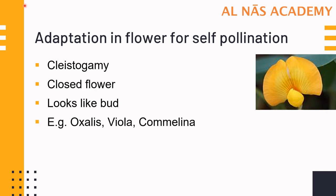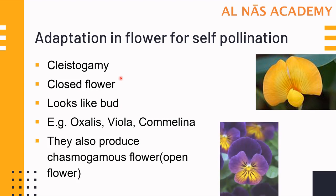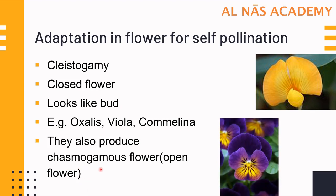An example is oxalis, viola, and Commelina. These plants produce two types of flowers: kleistogamous and chasmogamous. Chasmogamous flower means an open flower. Kleistogamous flower is an adaptation for self-pollination, and chasmogamous flower is an adaptation for cross-pollination. We will study chasmogamous flowers when discussing cross-pollination in detail.